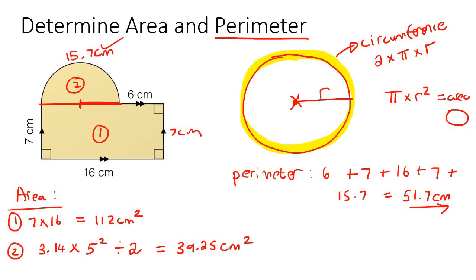So to work out the total area of the shape, we're just going to add these two values together. And so if we add the area of one plus the area of two, that'll give us 151.25 centimeters squared.